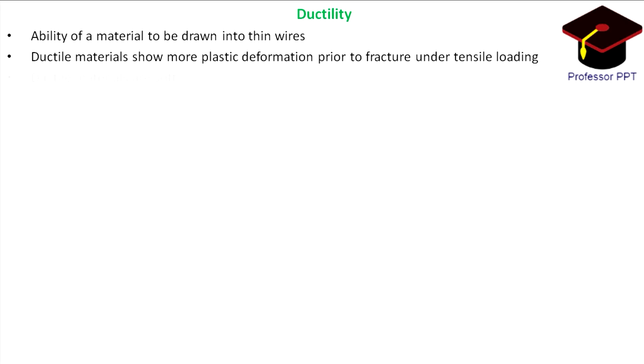Ductility: It is the ability of the material to be drawn into thin wires. Ductile materials show more plastic deformation prior to fracture under tensile loading. Ductile materials are soft. It is expressed by percentage elongation: percentage elongation equals the difference between the final length and the original length divided by the original length times 100.